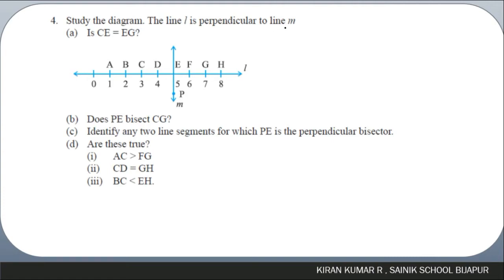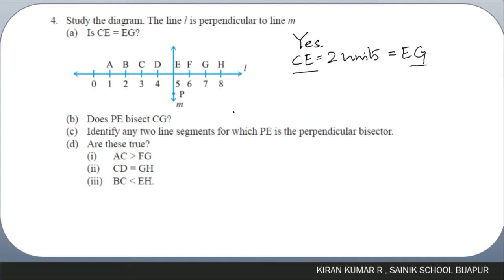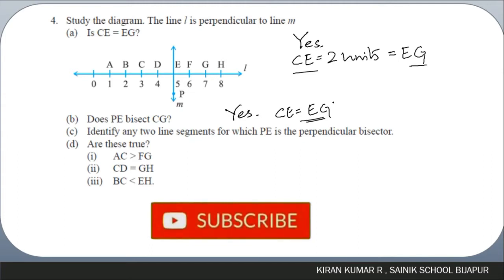Question four: study the diagram where line l is perpendicular to line m. Is CE equal to EG? Yes, because the length of CE is two units and the length of EG is also two units, so they are equal. Does PE bisect EG? Yes, because E becomes the midpoint, meaning CE equals EG, so it bisects CG.